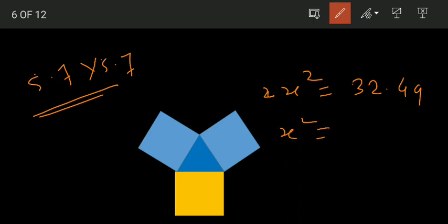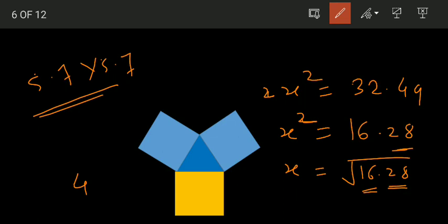So x² is equal to 16.245. Divide both sides by 2. We need decimal to two units. Now x is equal to take root of this, 16.28.